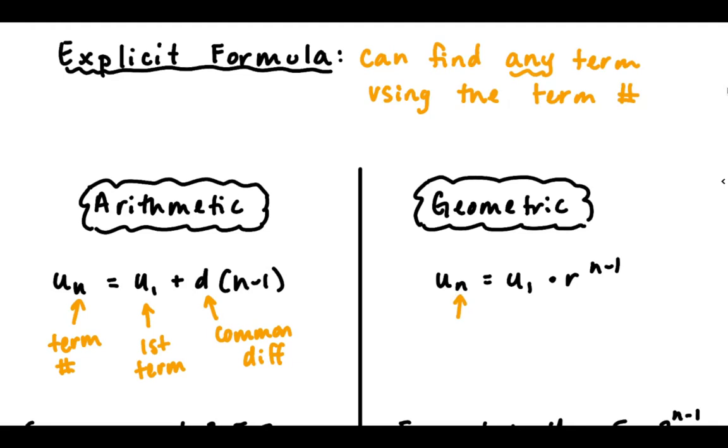It's similar for geometric sequences. Again, n is the term number, u_1 is our first term, and this time r is our common ratio—the number we're multiplying by every time.